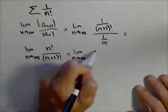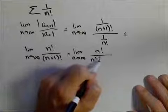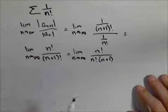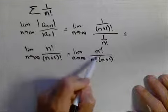In fact, we'll leave the top as n factorial, but I can write the bottom as n factorial times n plus one because that's all n plus one factorial is. What that does is it allows me to identify a cancel here.